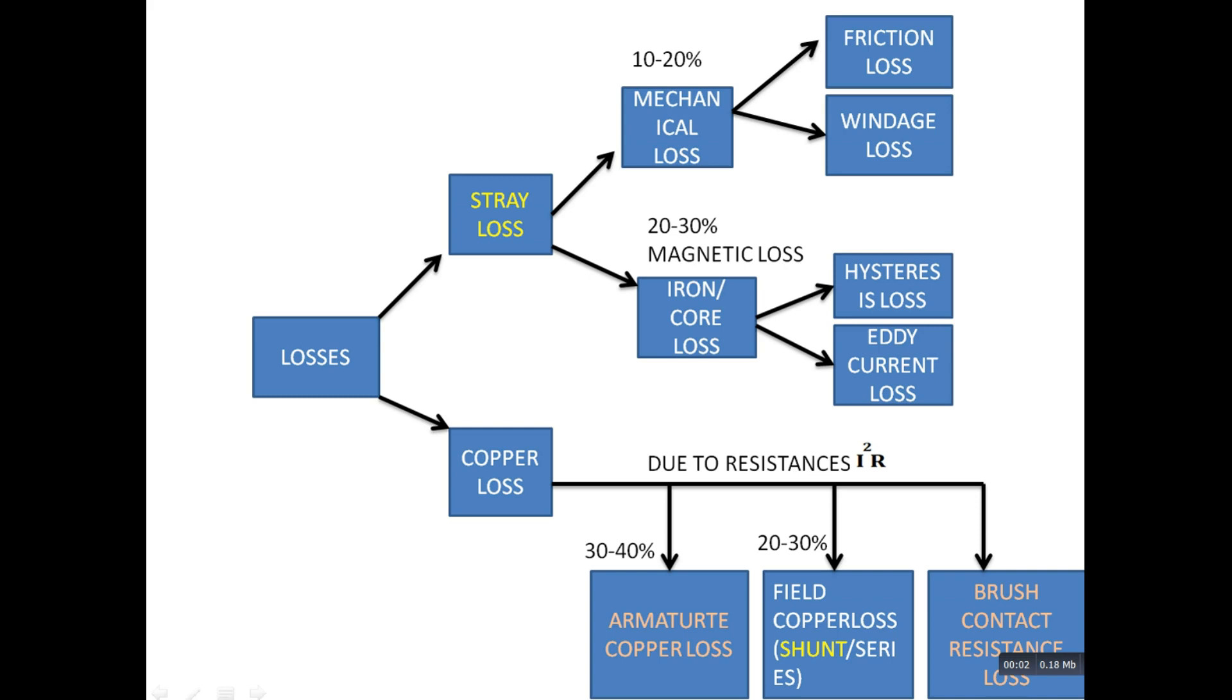Stray losses marked in yellow are constant losses. Armature copper loss is a variable loss.